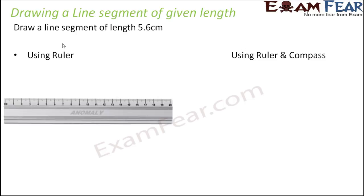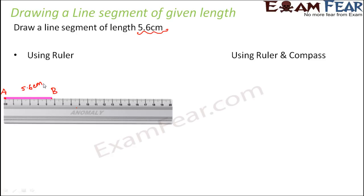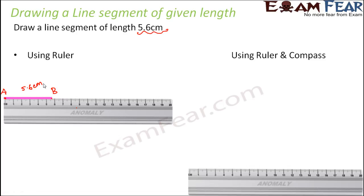For the ruler-only option, you take a ruler and mark the zero point on one end as the starting point. Then you mark the other point at the given length — 5.6 centimeters. You join these two points and you get a line segment of length 5.6 centimeters. So if this is line segment AB, its length is 5.6 centimeters.